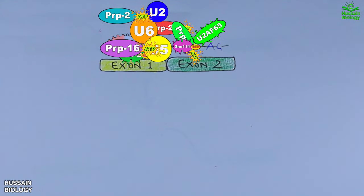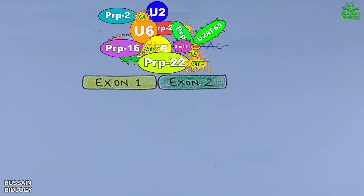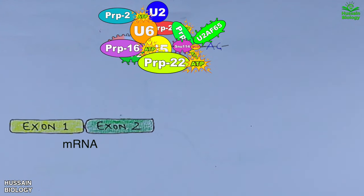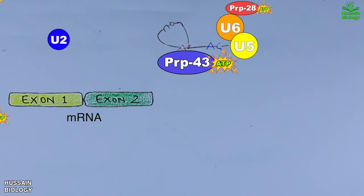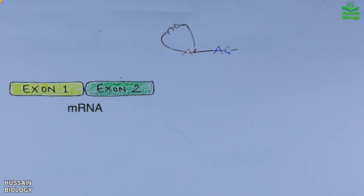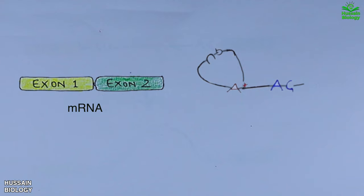But still the lariat intron is bound to spliceosome and the mRNA still needs to be released. To mediate this, PRP22 binds and releases the mRNA molecule first. After that, PRP43 binds, which disrupts the intron lariat spliceosome complex or ILS complex, thereby releasing the lariat intron as shown in the diagram.